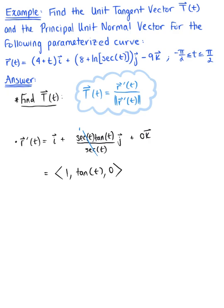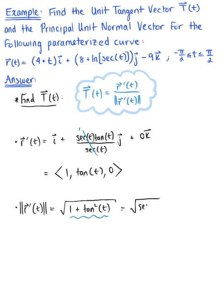There are no scalar multiples, so we can go right ahead and find the magnitude. The magnitude of our tangent vector is equal to the square root of 1 squared plus tangent squared of t plus 0. We see a Pythagorean identity here — this equals the square root of sec²(t). The square and square root cancel each other out, leaving us with sec(t).